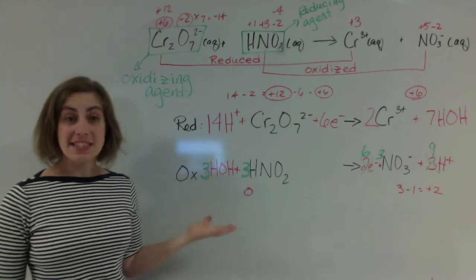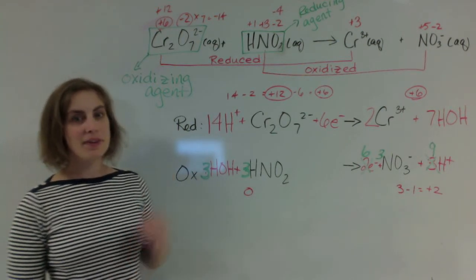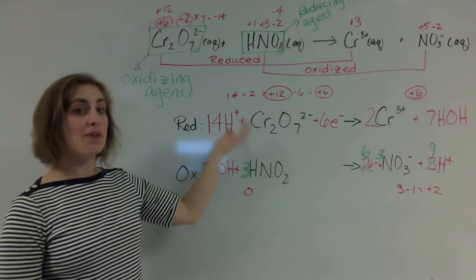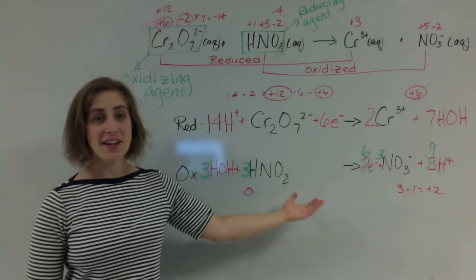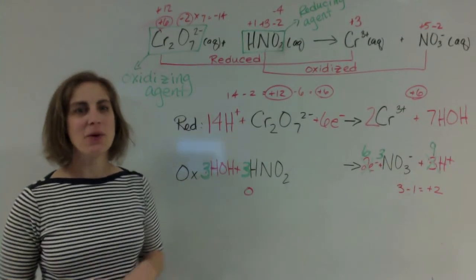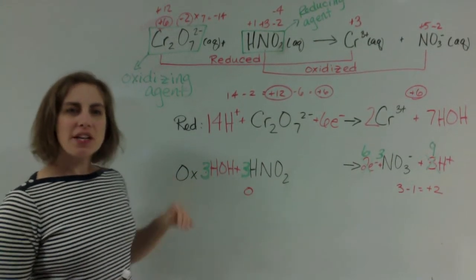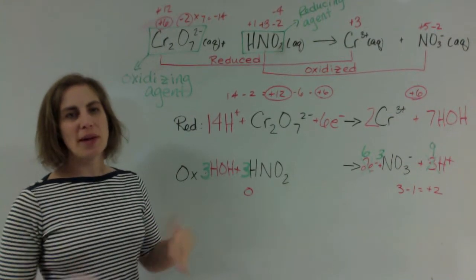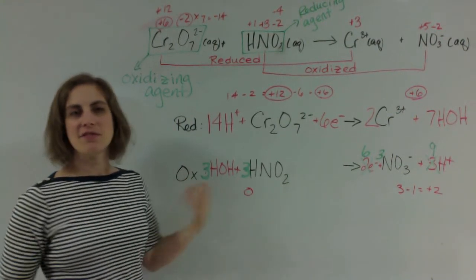So now, if I add these things together, things are going to cancel. If I have six electrons on the reactant side, and six electrons on the product side, it's sort of like a spectator. It didn't really do anything. So we'll get rid of it. But we're going to do all that scratching out before we actually write our final equation, just to make it easier.